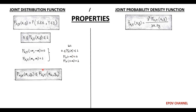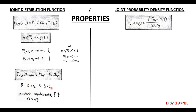The next property is that just as the CDF is a monotonic non-decreasing function of single random variable X, the joint distribution function is also a monotonic non-decreasing function. This means if x₂ > x₁ and y₂ > y₁, then F(x₁, y₁) ≤ F(x₂, y₂) — the joint distribution function is always monotonic non-decreasing for both real values x and y.